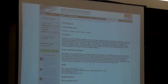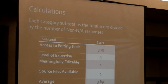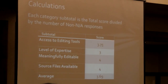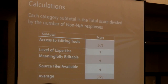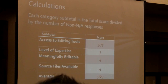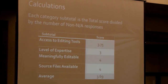Here's an example. This is a syllabus for Visualizing Cultures off MIT OCW. It's text on a webpage. We end up scoring it: access was 3.75, level of expertise was 3, meaningfully editable was 4, source files was 4 — because MIT OCW does a good job of letting you download the source HTML. The average came out to be 3.69, which is pretty high. We've done others where we've done Real Media files — probably around a 1.6. You can see that this text from MIT OCW, because it's easy to float around, cut and paste, and the source files are available, the score is high.